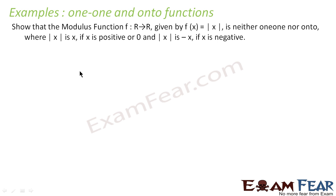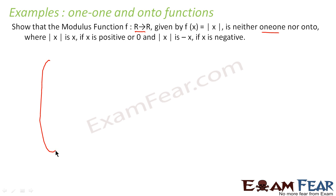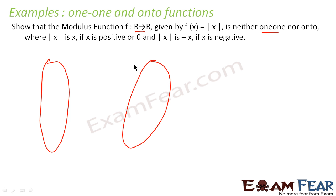Let us take one more example. We have a similar question, but instead of the greatest integer function, we have the modulus function. This is from R to R, and we have to prove that it is again neither one-one nor onto. So, let us draw the same pattern — two circles, both representing R.